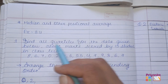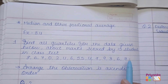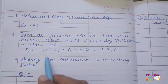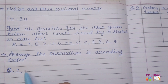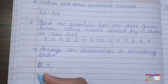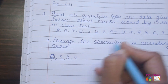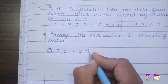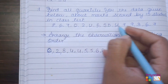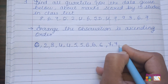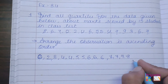First, note the data from the book. The question asks for all quartiles — Q1, Q2, and Q3. First, arrange the observations in ascending order: 0, 2, 3, 4, 4, 5, 6, 6, 6, 7, 7, 7, 8, 9. Make sure all 15 values are included.